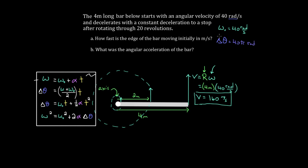Our third known: the bar decelerates to a stop, meaning omega-final equals zero. We want to find alpha. The left-out variable is time — it was neither given nor asked for. So we use the formula that doesn't involve time at all, which is the fourth formula. That's the one we'll use.